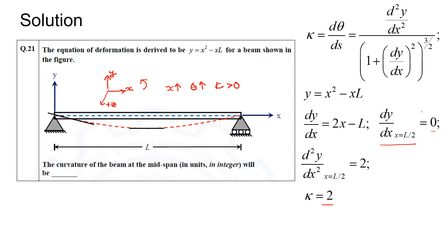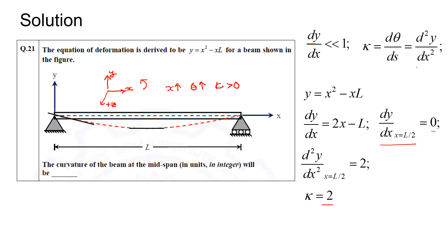Since dy/dx at x = l/2 came out to be 0, there was no ambiguity as to which curvature formula to use. If the question asked for curvature at another point where dy/dx ≠ 0, the question would need to specify whether deformations are large or small. Since dy/dx = 0 at mid-span, considering or ignoring large deformation is immaterial and leads to the same answer. Hence our answer is +2.